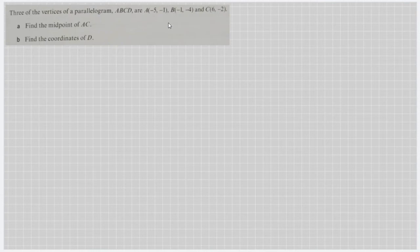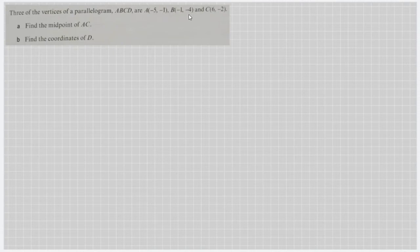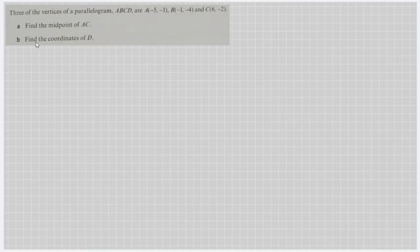Let's start. Three of the vertices of a parallelogram are: point A negative 5, negative 1; point B negative 1, negative 4; point C 6, negative 2. We are asked to find the midpoint of AC, and then we will be finding the coordinates of D.